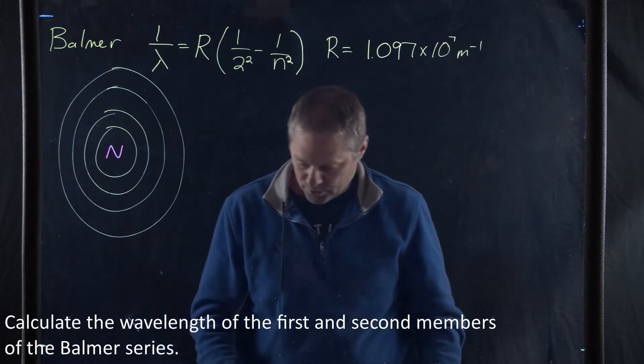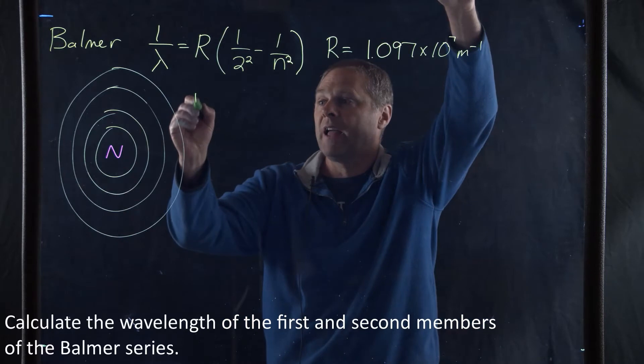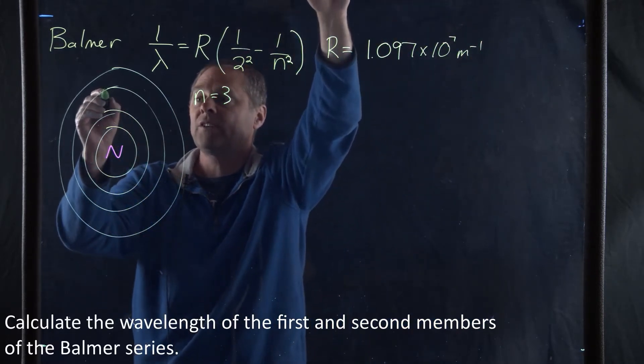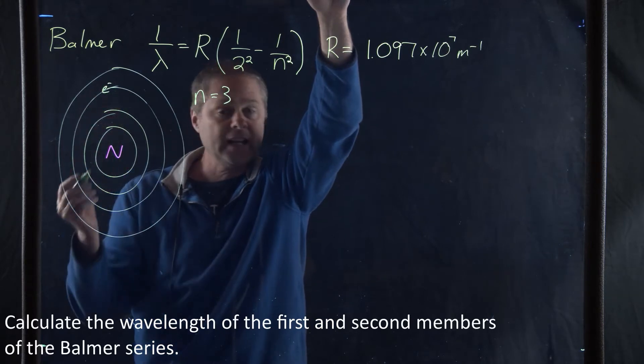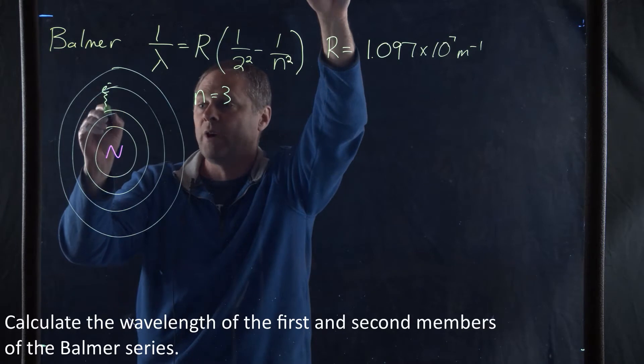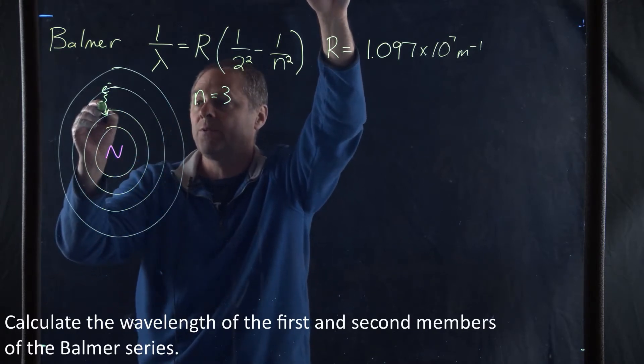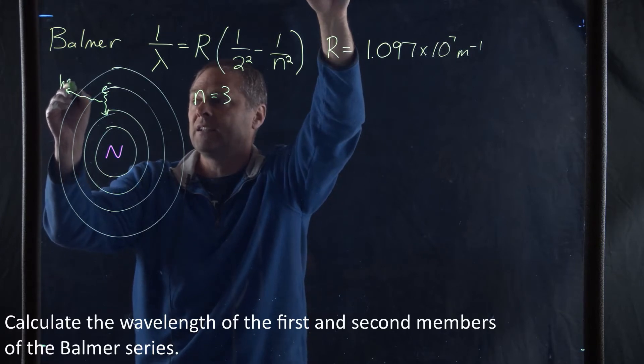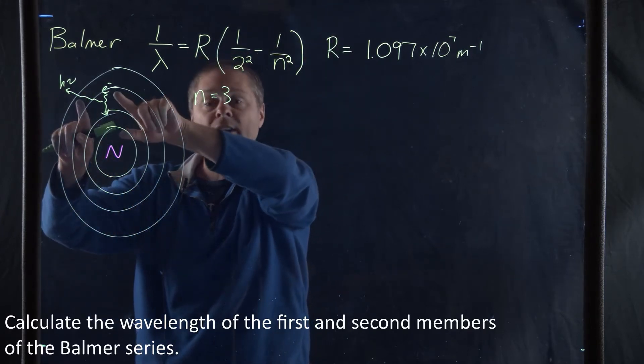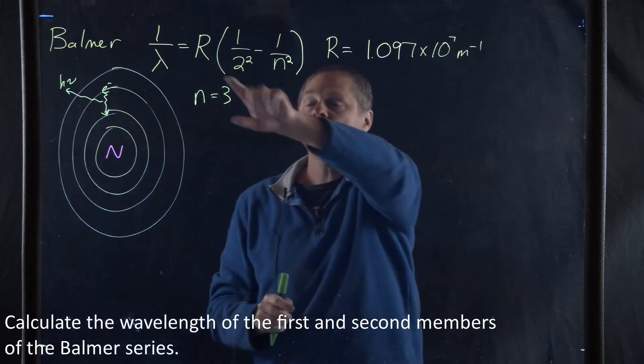And so for the first one, what we have is for the first series, we're going to have n is equal to 3. And what that means is if we have an electron in an excited state here, and it can get there by electrical discharge, that it's going to radiate down to the n equals 2 state. And from that, light is going to be emitted. And then what is the wavelength of that light from the electron traveling from the third state to the second state?